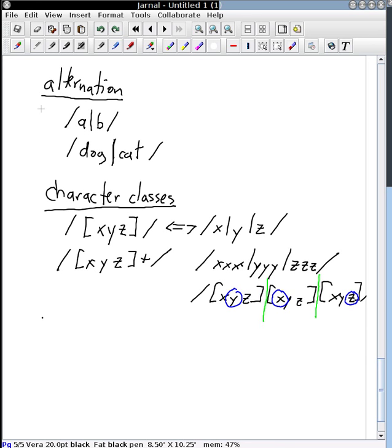There are some character classes that are used so frequently that in order to save space we have shorthand. So one character class is 0 through 9.